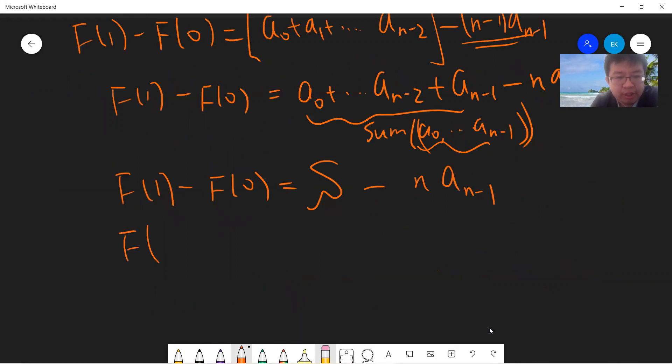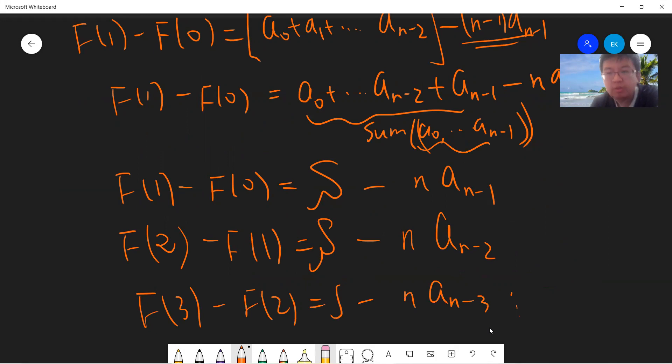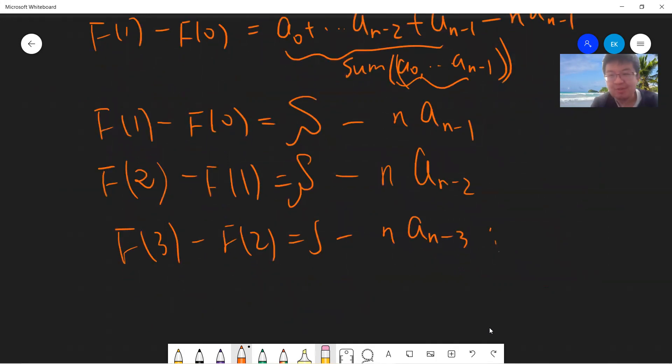You can easily check that if you do f(2) minus f(1), you get the same thing: S minus n times a_(n-2). And f(3) minus f(2) will be S minus n times a_(n-3), and so on.